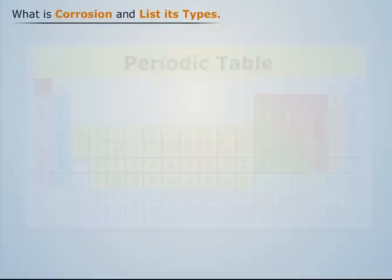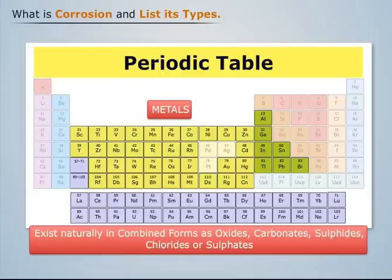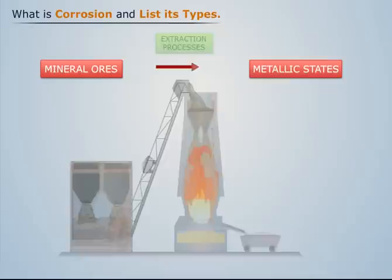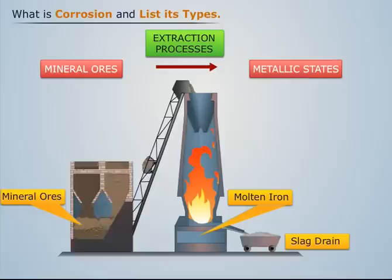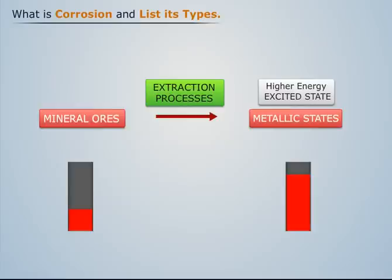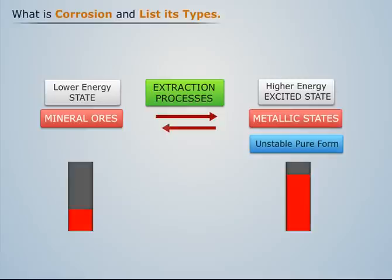What is corrosion and what are its types? We know that all metals except gold, platinum, and palladium exist naturally in combined forms as oxides, carbonates, sulfides, chlorides, or sulfates. Metals in combined forms are known as minerals. These mineral ores are reduced to their metallic states during extraction processes. Large amounts of energy are consumed in this process, so isolated pure metals can be considered to be in a higher energy excited state compared to their corresponding ores. Thus, pure metal in this unstable higher energy state tends to revert back to its stable natural combined form, which is the lower energy state.